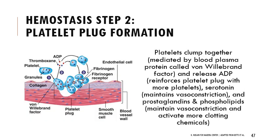After the vascular spasm, platelet plug formation occurs. Platelets arriving at the spasm clump together, mediated in part by a protein called von Willebrand factor. Those platelets release ADP — adenosine diphosphate — which reinforces the platelet plug with more platelets. They also release serotonin to maintain vasoconstriction, and prostaglandins and phospholipids that maintain vasoconstriction and activate more clotting chemicals.